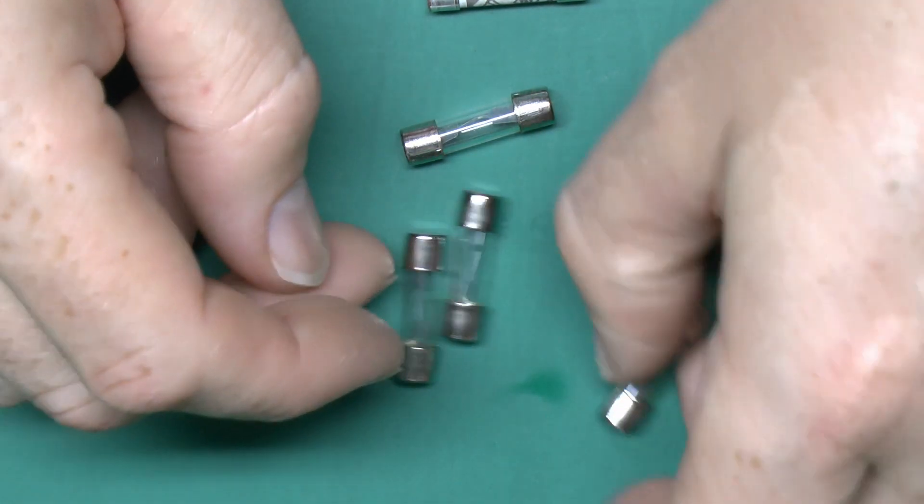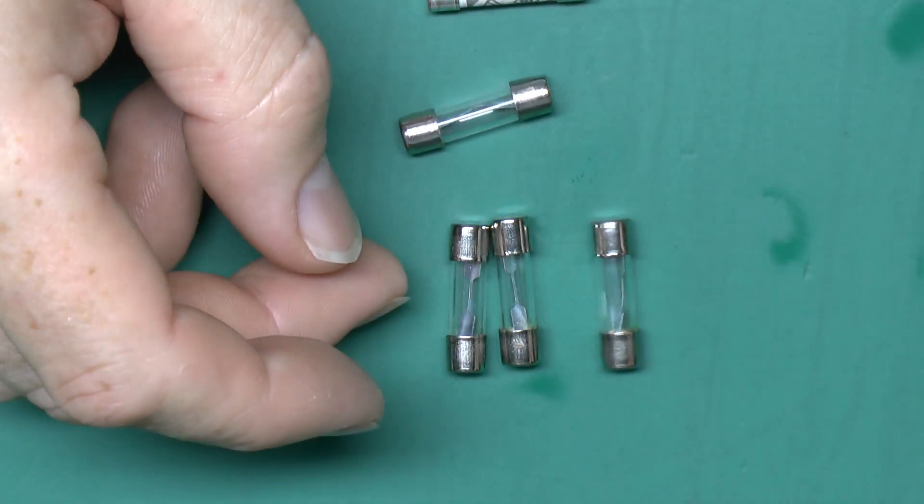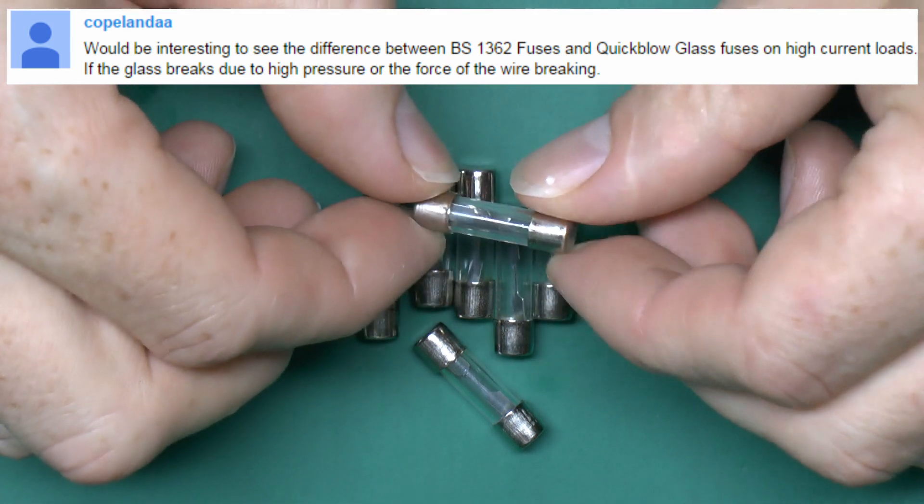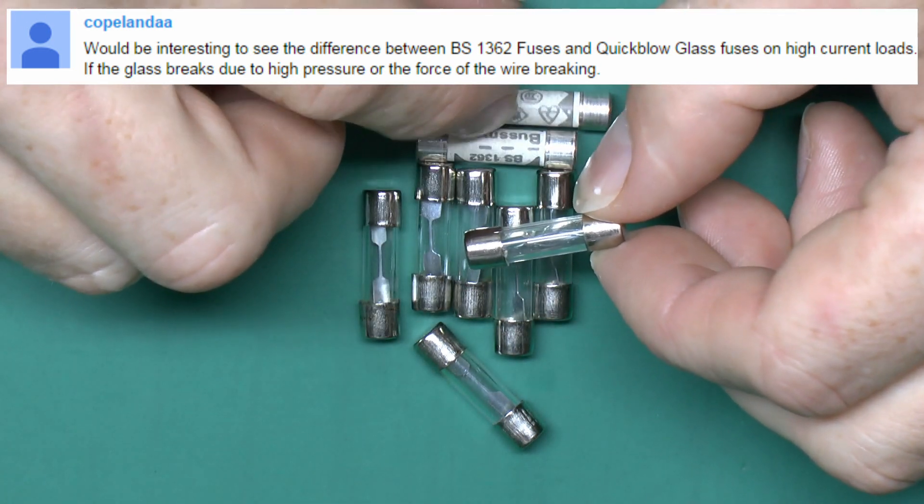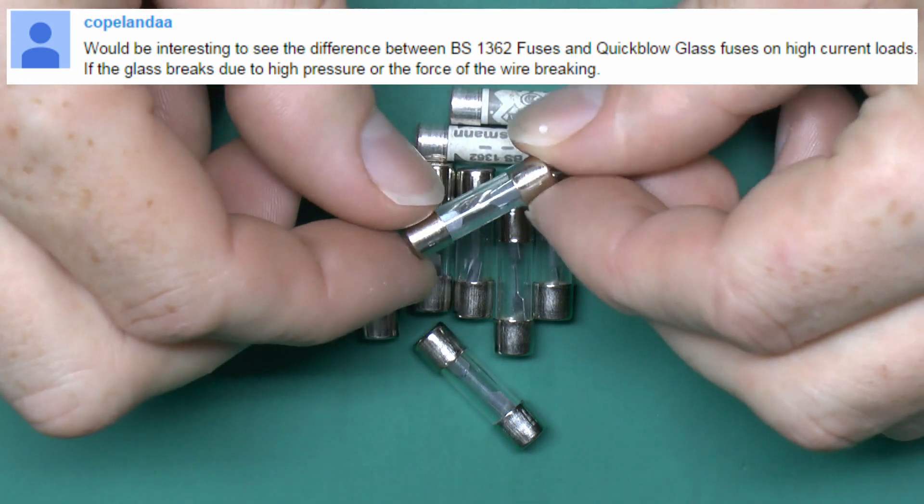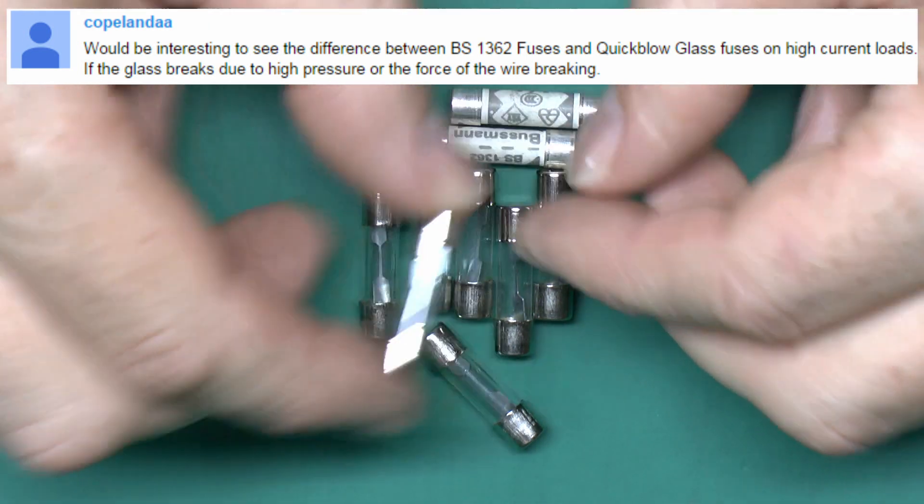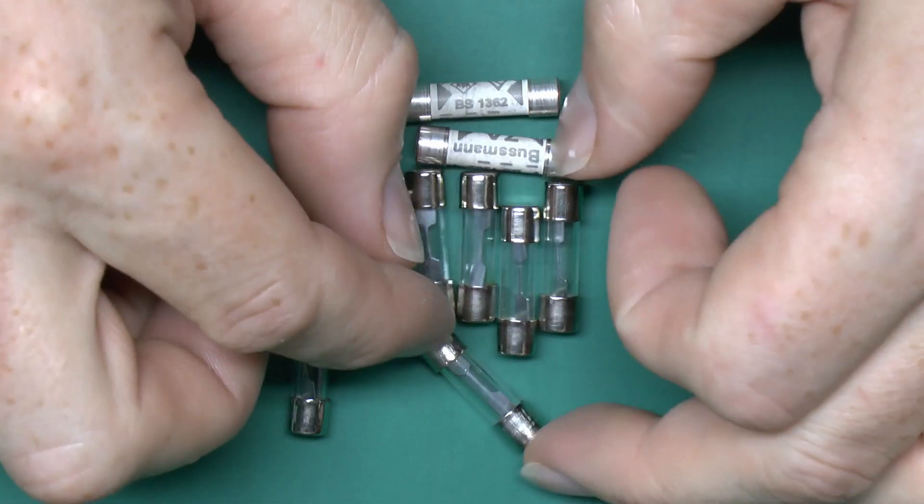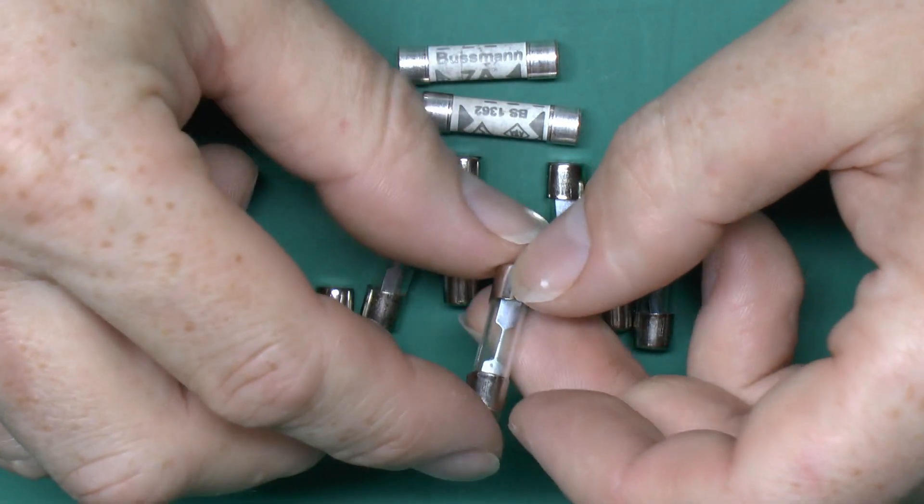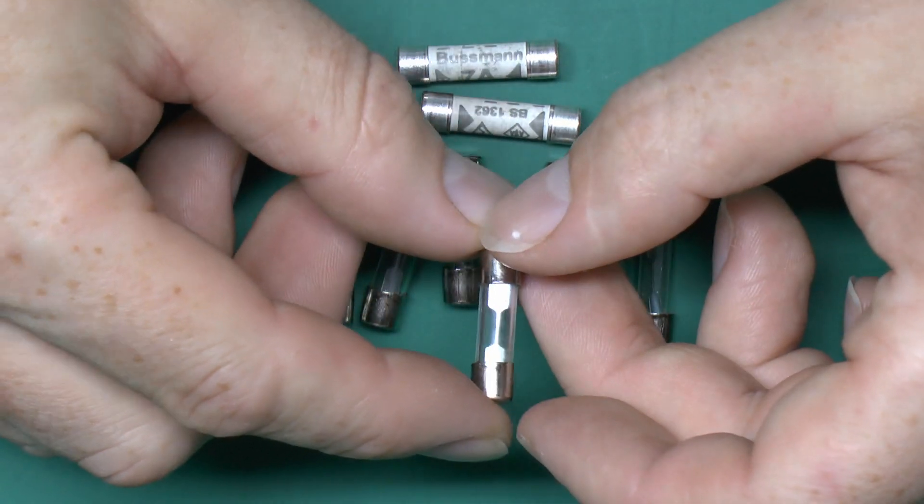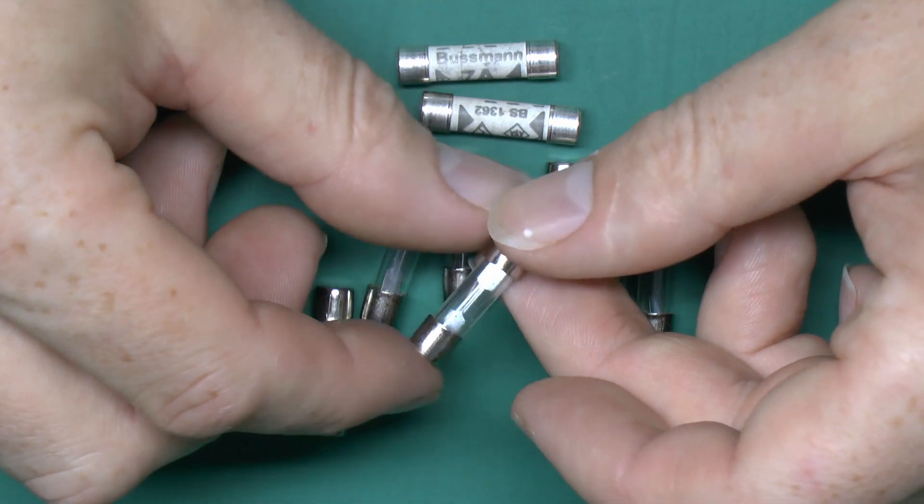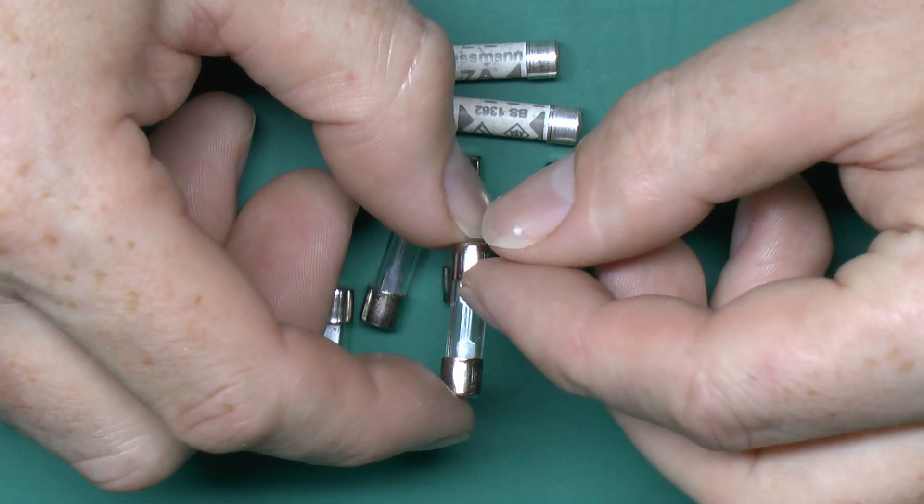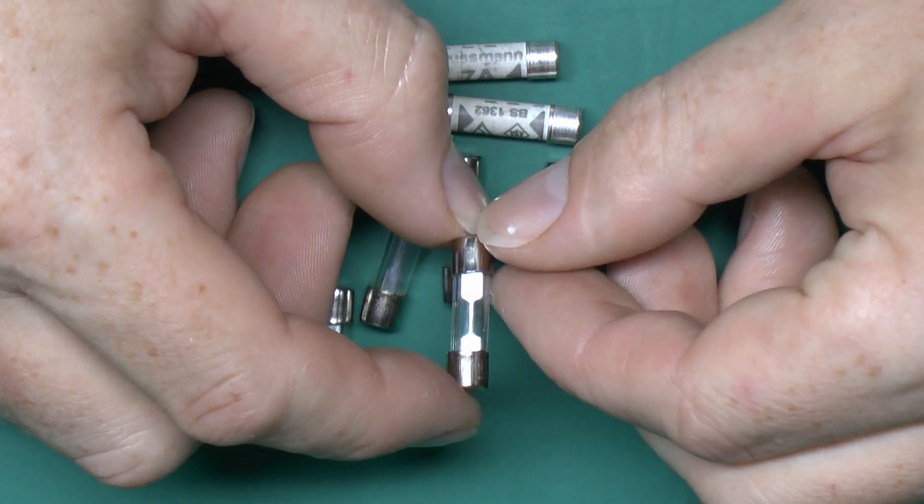Now I've got a few of these because somebody suggested, I can't remember the name but I'll stick it up on the screen there, that it would be interesting to see what would happen if we put various currents through these as compared to the proper ceramic type and whether they would explode. Well I would imagine that they probably will. Because of course the ceramic is designed to contain the explosion inside. Whereas of course a thin piece of glass obviously is not. And these are not really designed for use on main circuits anyway. So what we'll do is pop outside and we'll use a similar testing setup that we had before with the rewireable types. And let's put various currents through these and see how they fail.